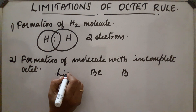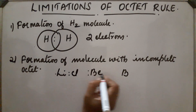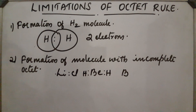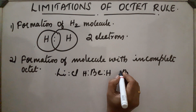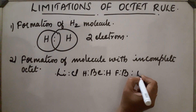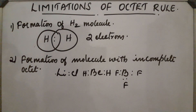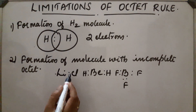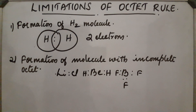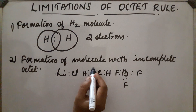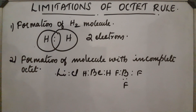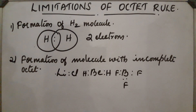Examples include lithium chloride (LiCl), BeH2, and BF3. The lithium atom contains only two electrons in its valence shell after covalent bond formation. Beryllium contains only four electrons in its valence shell after covalent bond formation. Boron contains only six electrons in its outermost shell. So these atoms — lithium, beryllium, boron, and so on — form an incomplete octet. This is the second exception.